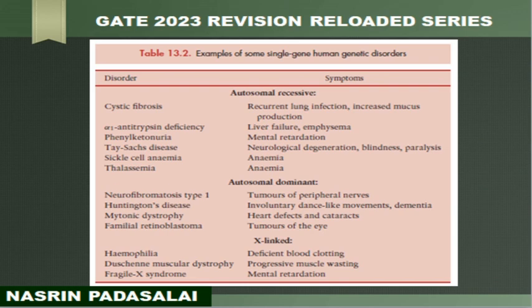Next is autosomal dominant disease pattern. This includes neurofibromatosis, Huntington's disease, myotonic dystrophy, and familial retinoblastoma. All are following autosomal dominant pattern and they are also caused by a single gene.